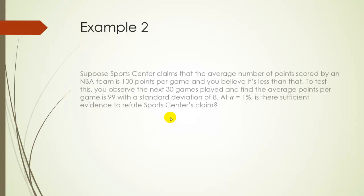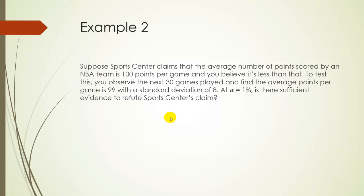So for example two, this is a completely made-up example, by the way. So far, all of these have been. So suppose SportsCenter claims that the average number of points scored by an NBA team is 100 points per game, and you believe it's less than that. So to test this, and for some reason you don't want to just look it up online because that would be something you can easily look up online, but let's just take this as it is. So to test this, you're just going to watch the next 30 games played and find the average points per game. Well, the average for those 30 games you watched was 99, and the standard deviation was 8. So at a 1% significance level, is there sufficient evidence to refute the SportsCenter's claim? All right. So if we're refuting it, remember, we believe it's less than that. So let's do a left-tail test or a lower-tail test. So let's identify HO and HA. It's always a good place to start to identify what we're trying to prove and disprove. So HO is the claim that the true mean is 100, and we believe it's less than that, that mu is less than 100.